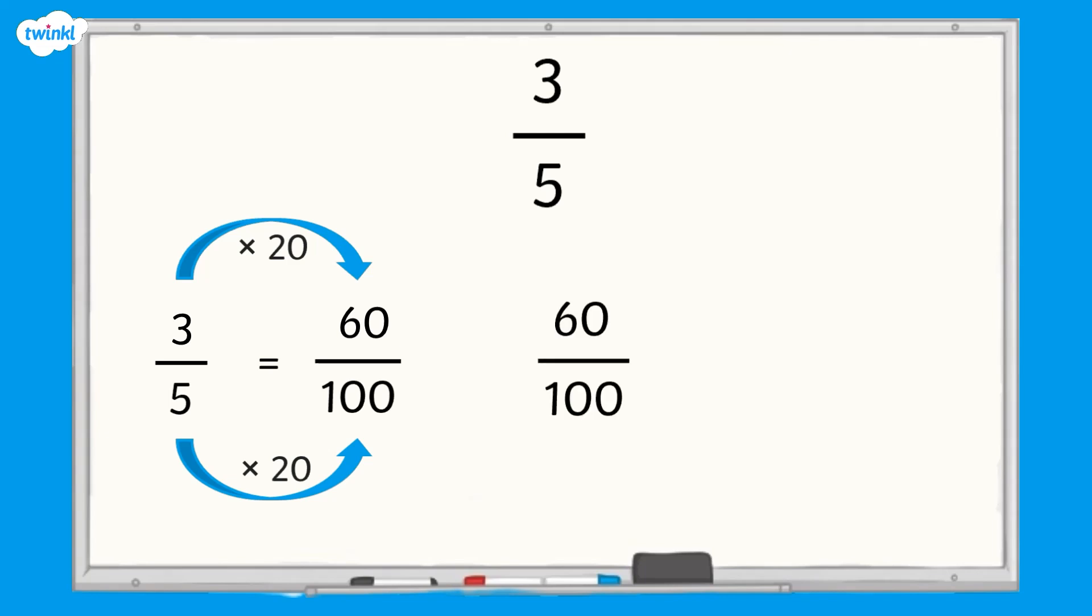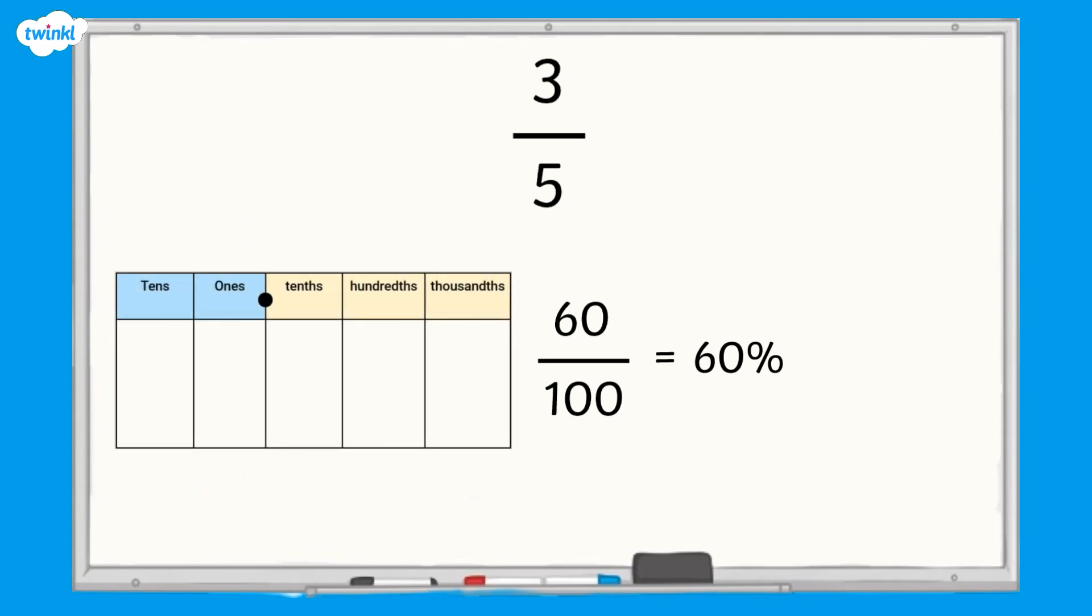Now we have sixty-hundredths, we can find the equivalent percentage and decimal. Sixty-hundredths is equivalent to sixty percent. Sixty-hundredths can be partitioned into six tenths and zero hundredths. So we can write this as the decimal zero point six zero. We can even ignore the hundredths column as there are no hundredths and write the decimal as zero point six.